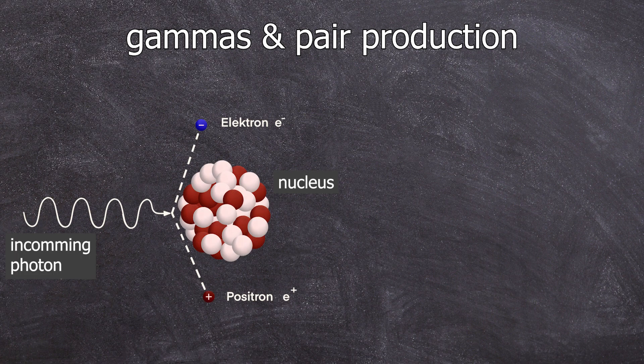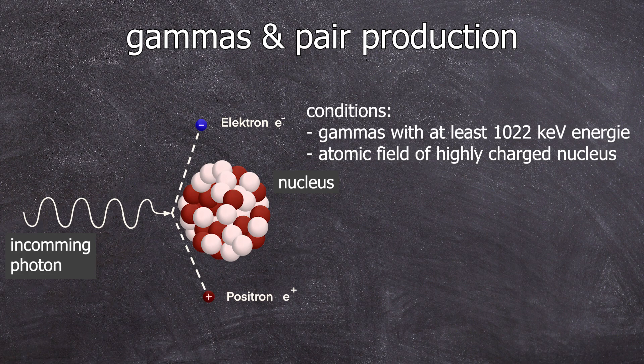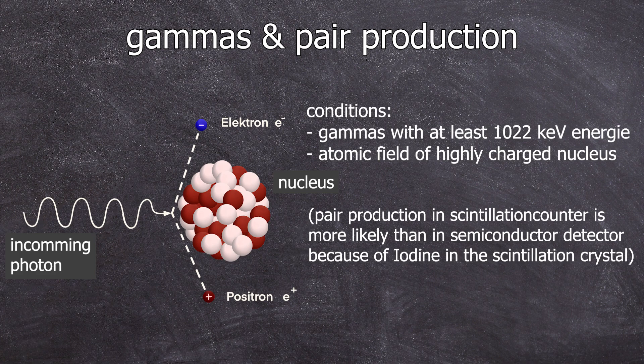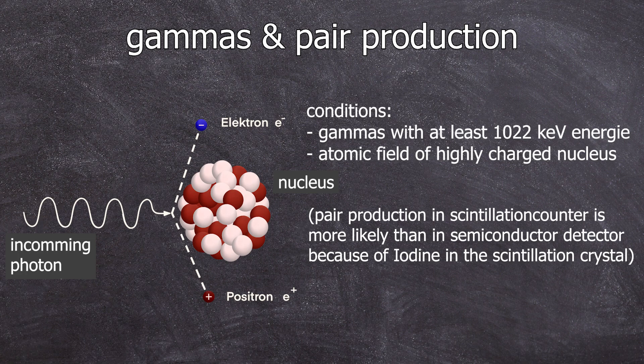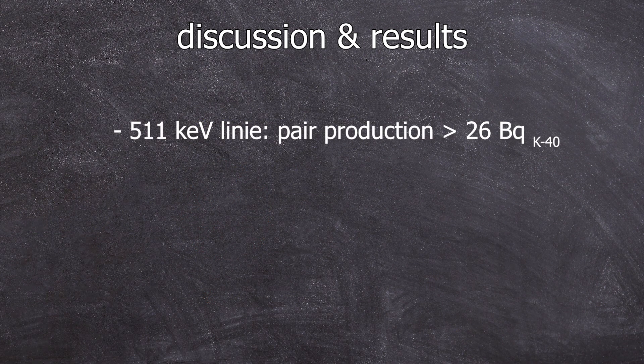There is another source that can account for this peak known as pair production. We've seen there is a natural gamma background. If these gamma photons have at least 1022 kilo electron volts of energy, and if they encounter an atomic field in an atom, probably in the air or something, they can create an electron-positron pair. This means that we have another source of 511 kilo electron volt gamma photons in the form of positrons once again. And this pair production from the high energy photons is way more likely than the 26 becquerels of potassium-40, which form positrons 0.001% of the time. But at least now we've learned something new.